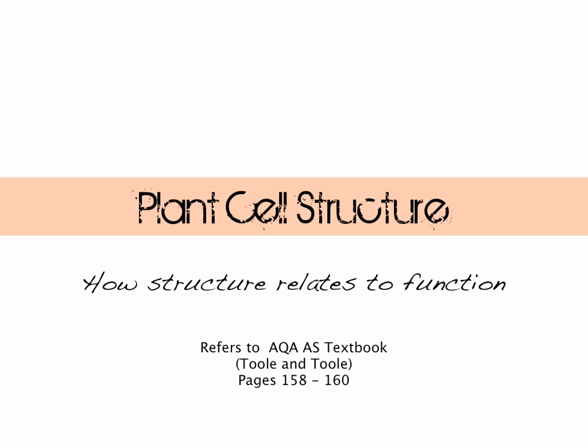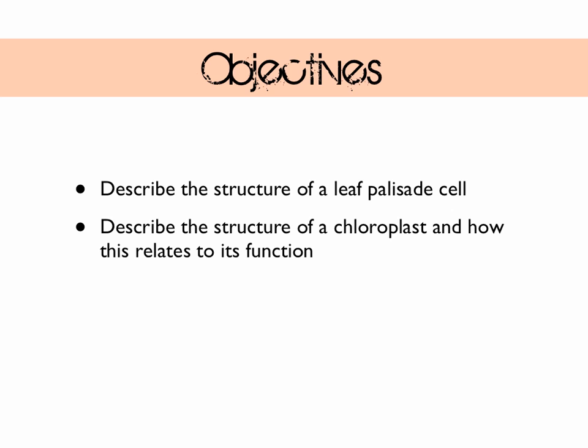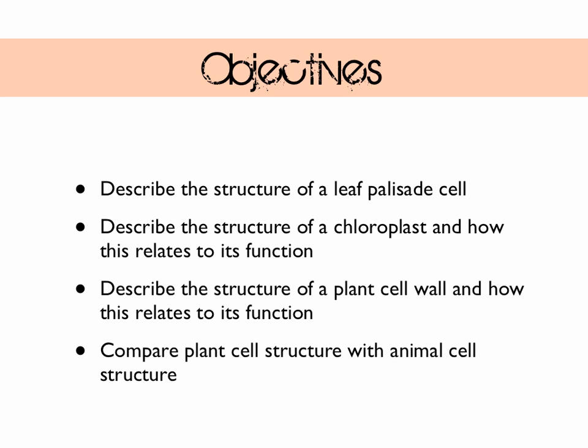Let's look at our objectives. You're going to describe the structure of a leaf palisade cell. You're going to describe the structure of a chloroplast and how this relates to its function. You're also going to describe the structure of a plant cell wall and how this relates to its function. And finally you're going to compare the structure of a plant cell with the structure of an animal cell.